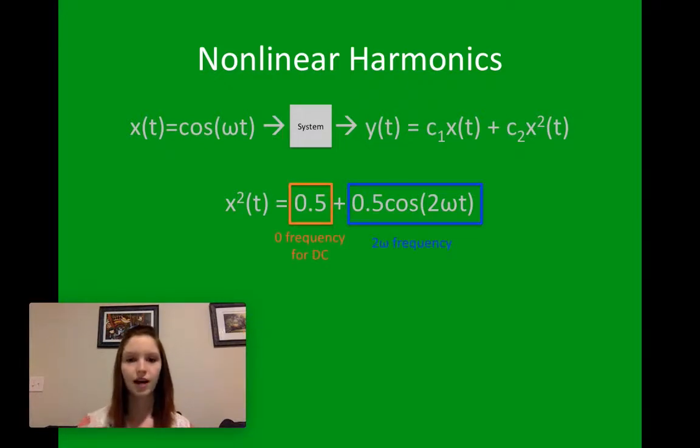So, since we have a half over here, we're going to know that we have zero frequency change for DC for the second harmonic, which is x squared. And we're going to have a 2 omega frequency phase change for the next harmonic.